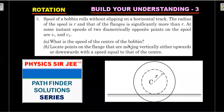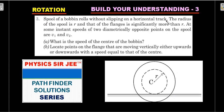Let's move forward and start with the Rotation Build Up Your Understanding question. A spool of a bobbin rolls without slipping on a horizontal track. The radius of the spool is r and that of the flanges (the outside ones) is significantly more than r. At some instance, the speeds of two diametrically opposite points on the spool are v1 and v2. What is the speed of the center of the bobbin? Also, look at the points on the flange that are moving vertically either upward or downward with speed equal to that of the center.